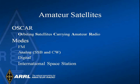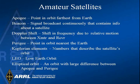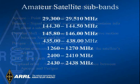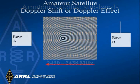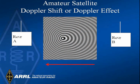Hams have designed and built many orbiting satellites. The International Space Station is even a ham satellite. Ham satellites are used like very high altitude repeaters. There is a vocabulary associated with amateur satellites, such as apogee, perigee, and Doppler shift. Here is a listing of ham radio satellite subbands. Doppler shift refers to the shift in frequency because the satellite is traveling so fast — it is like the change of frequency you hear when a railroad train goes by.